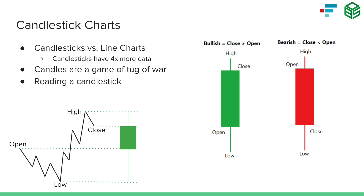On the right-hand side you can see two example candlesticks. One is a bullish candlestick in green, which indicates price was up that day. On the right is a red bearish candlestick, which indicates price was down. In the middle of the candlestick is the body — that fatter rectangle — which gives us two data points: the open and close price. On a green bullish candlestick, the closing price is higher than the open, so the open is at the bottom of the body and the close is at the top. It's the opposite for a bearish candlestick: the close is lower than the open.